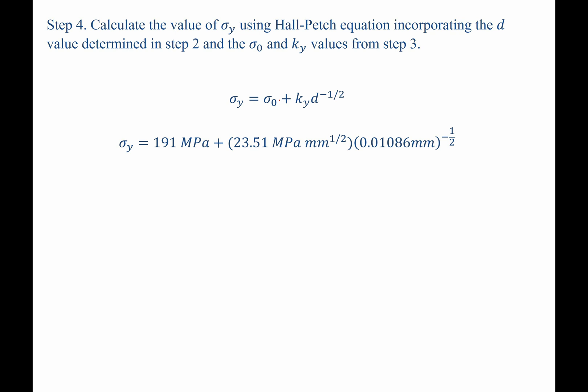Again, Hall-Petch equation is shown here. When we plug in the values from the previous steps, we have this. Punching this into our calculator, we find that the yield strength for this alloy after this heat treatment should be 416.9 megapascals.